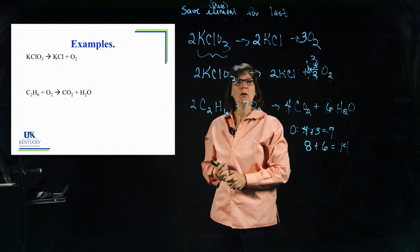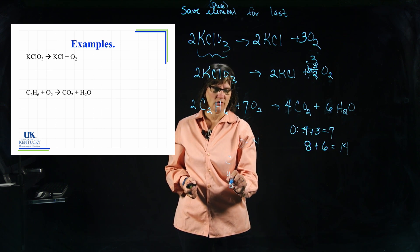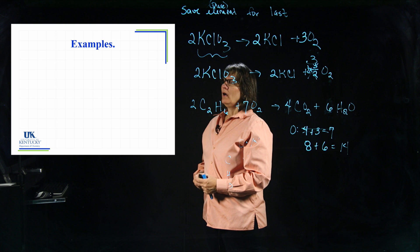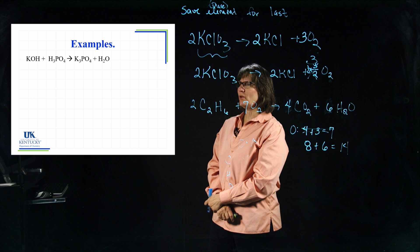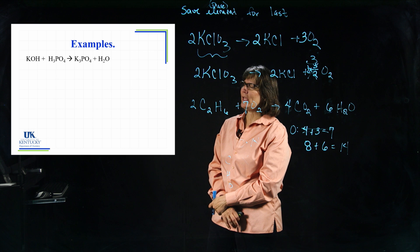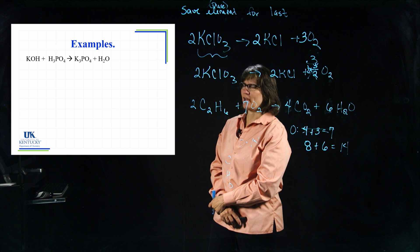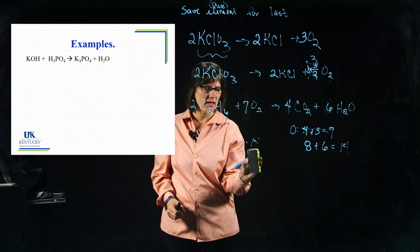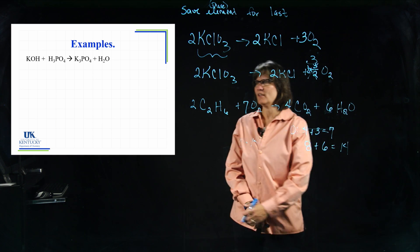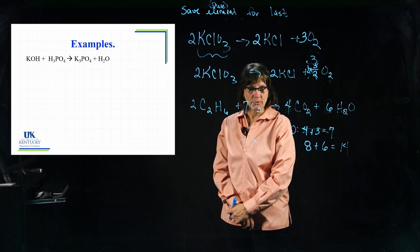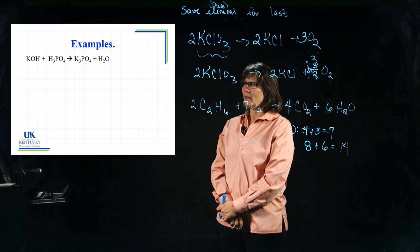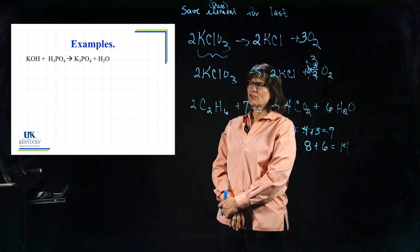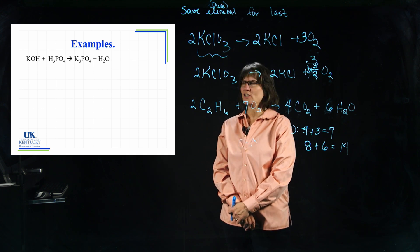Some students use grids to count atoms, and you can do that — but very often you can just look at it, apply a coefficient that balances one element, move to the next, and work through without a full grid. If you need to count carefully, that's fine. Now, sometimes it's handy to keep a group of atoms intact if they're the same polyatomic ion on each side of the equation. I'm talking about polyatomic ions — let's look at those in this next example. It's phosphate: rather than looking at P's and O's separately, it's much easier to balance if you think about the phosphate groups, the PO4 units.